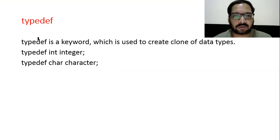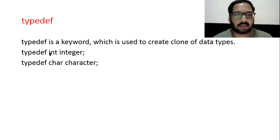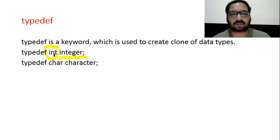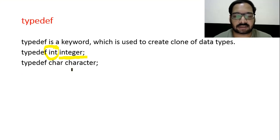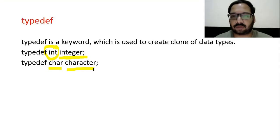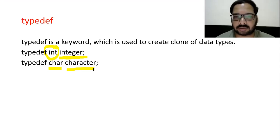Typedef is a keyword used to create a clone of a data type. For example, if you use int and you want to create variables using the word 'integer' instead, you can assign int's properties to the word 'integer'. Similarly for char you can use 'character'. Typedef basically assigns the property of one data type to another word — you can create clones of data types.